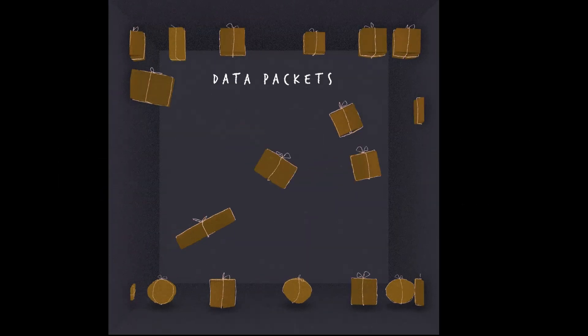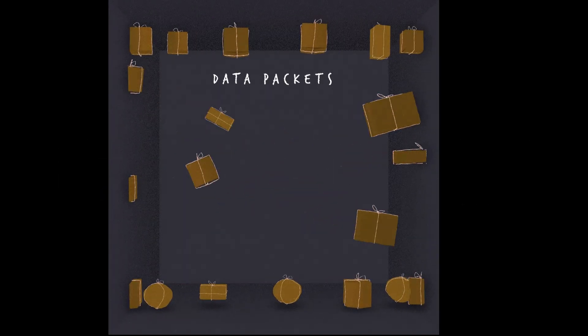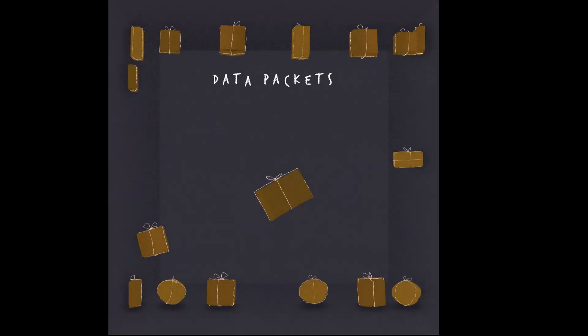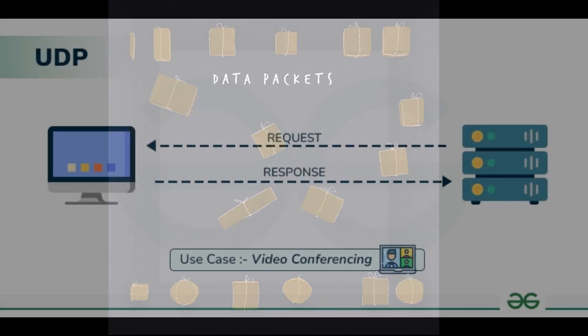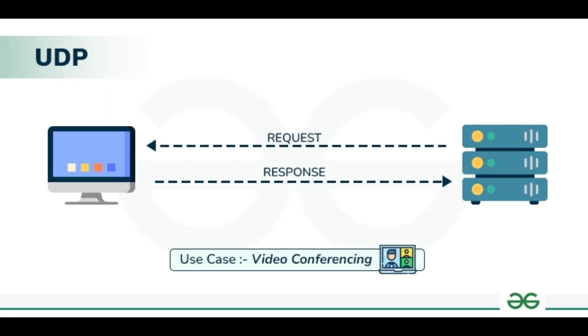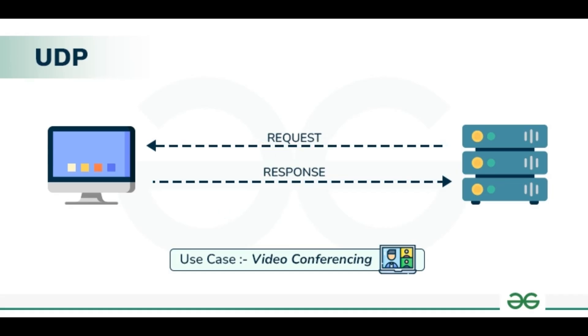When a connection is ready, data collected from your camera and mic are compressed into tiny data packets and sent directly to the other browser over UDP — a fast, low-latency protocol perfect for faster communication.